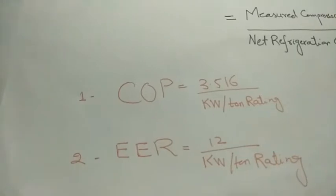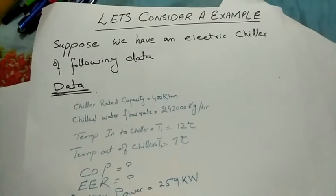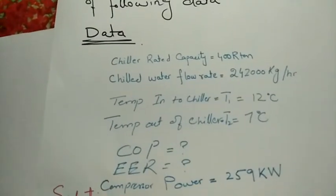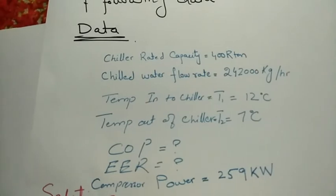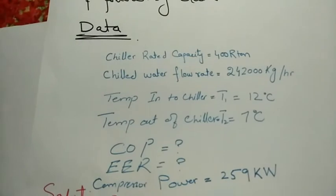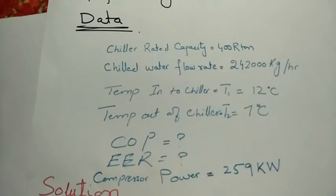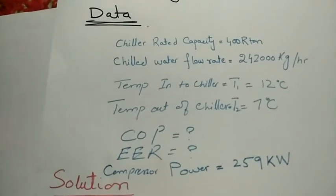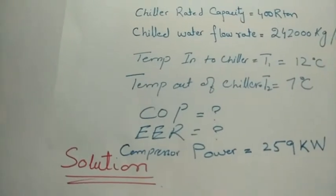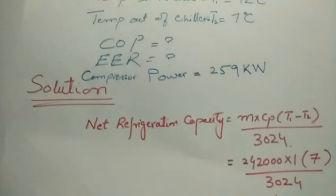Let's consider a practical example. Suppose we have an electric chiller with the following data: rated capacity 400 tons, chilled water flow rate 242,000 kilograms per hour, temperature inlet to the chiller (return from process) is 12°C, and temperature outlet of the chiller is 7°C. We need to calculate COP and EER while the compressor power is 259 kilowatts.